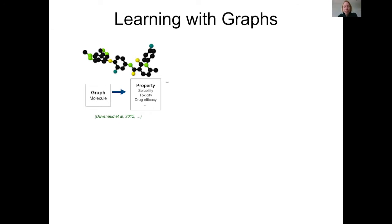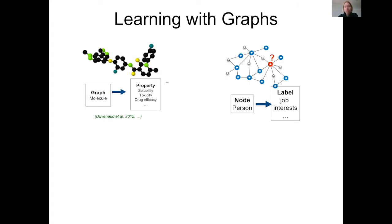To set the stage and motivate all of this, let me review a few problems where you may want to do learning with graphs. The first example is where your input is a graph and you'd like to predict something from it. For example, the graph could be a molecule and you'd like to predict properties such as solubility, toxicity, or whether it would work as a COVID drug. You need a good representation of that molecule — you have features of the nodes, which are the atoms, and possibly features of the edges too.